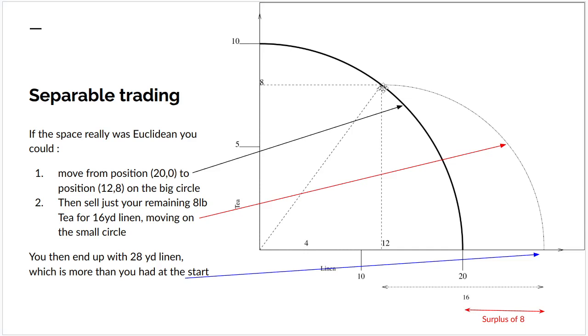You then sell your remaining 8 of tea for linen. Now if we plot a circle centered on the intersection here and take down this 8 of tea, you end up over there. So you end up with 28 yards of linen which is more than you started off with.